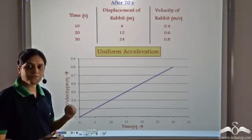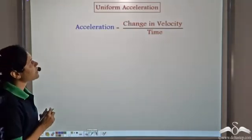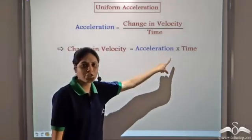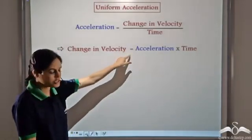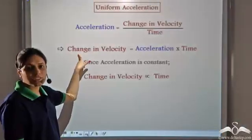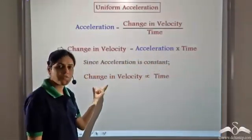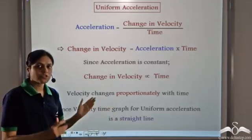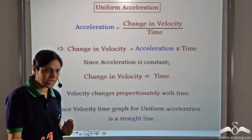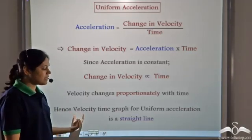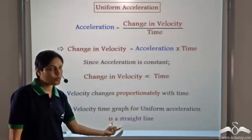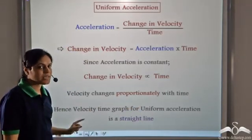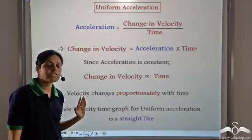This is the velocity-time graph for uniform acceleration. When we have uniform acceleration, change in velocity equals acceleration into time. Since acceleration is constant, change in velocity is proportional to time — velocity changes proportionately with time. When this happens, the velocity-time graph is a straight line. So when we have uniform acceleration, velocity changes proportionately with time and thus the velocity-time graph for uniform acceleration is a straight line.